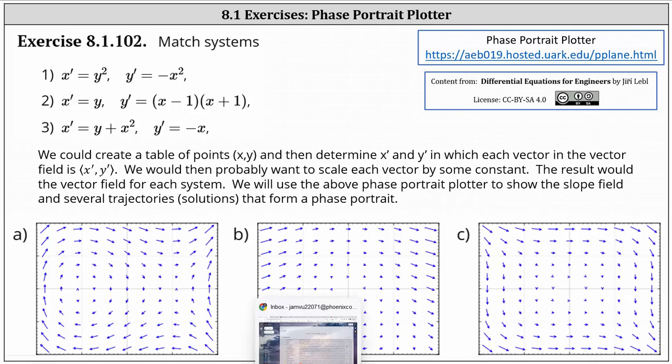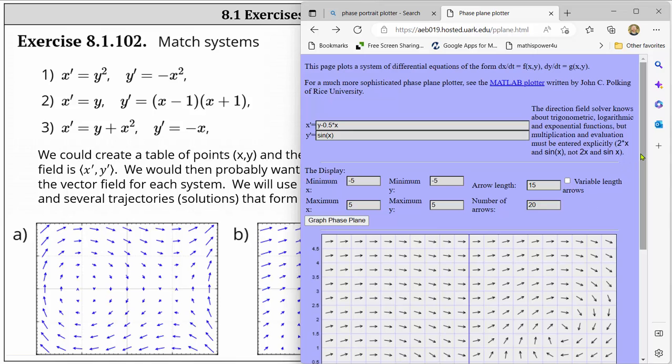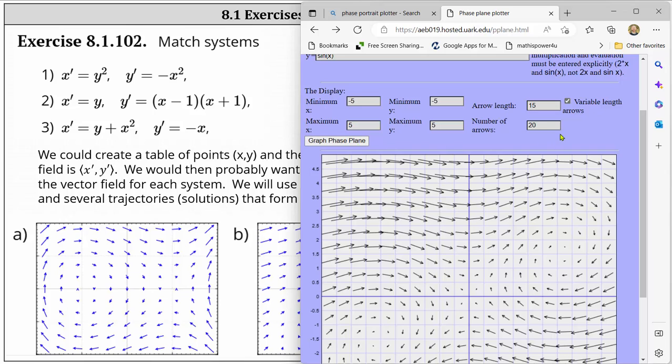Going to the website, by default we have x prime equals 0.5x and y prime equals sine x and we have several settings we can change below to change the format of the slope field. If we click graph phase plane we get the corresponding vector field. Notice right now the vectors all have the same length. If we click on variable length arrows and then graph phase plane again we do get variable length vectors.